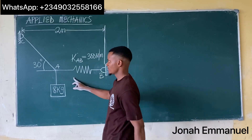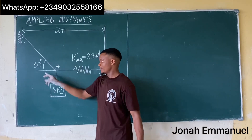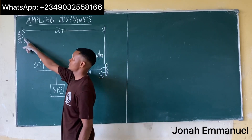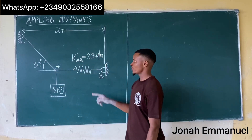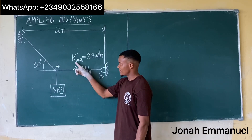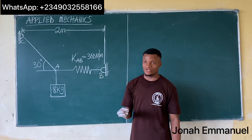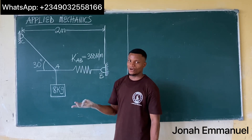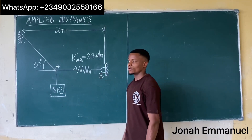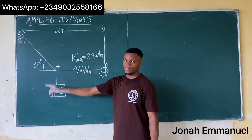For this case, I'm having this spring here and this one here. For this one, we're going to have a tension TAC, and for this one, it's also a tension TAB. The force on either a spring or a string is called tension. So whether it's a spring or a string, label them as tensions.